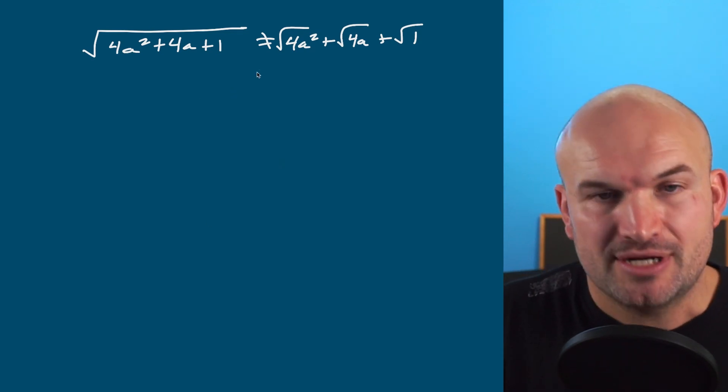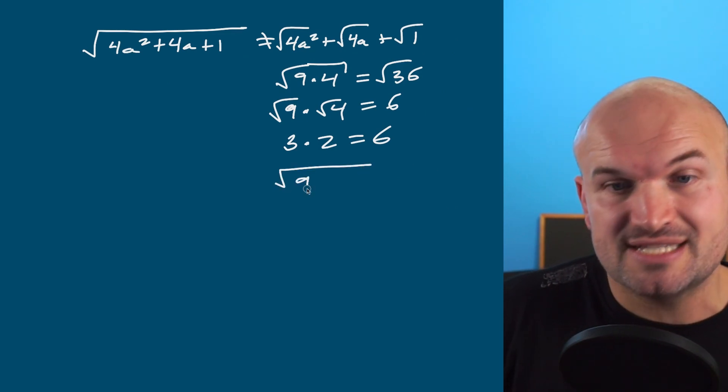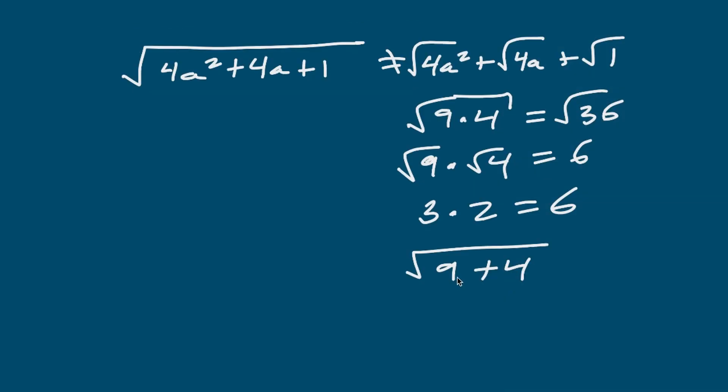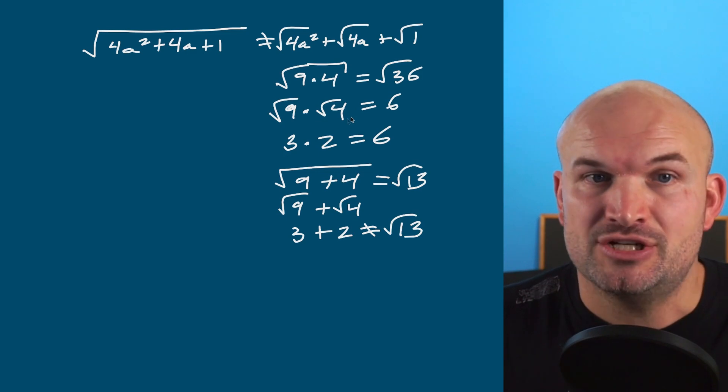I can just give you a quick little example here. If I had the square root of 9 times the square root of 4, if they're separated by multiplication, well, we know that's the square root of 36, which is 6. Just like we could say this is the square root of 9 times the square root of 4, which is 3 times 2, which is also equal to 6. However, if I break this up across addition instead of multiplication, the square root of 9 plus 4 is equal to the square root of 13. However, if I separate this, that'd be the square root of 9 plus the square root of 4, which is 3 plus 2. That does not equal the square root of 13. So it doesn't work across addition and subtraction. It does work across multiplication and division.